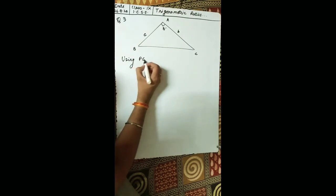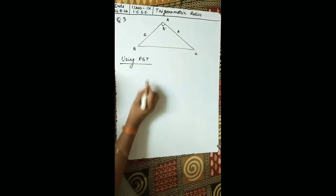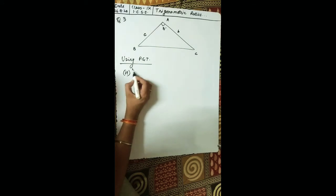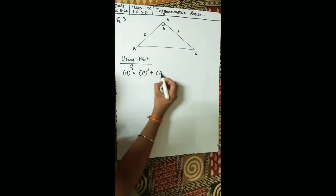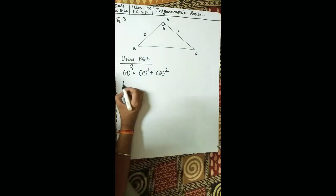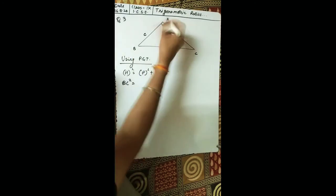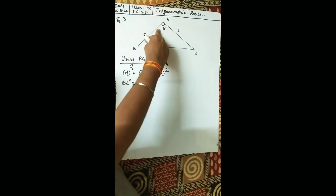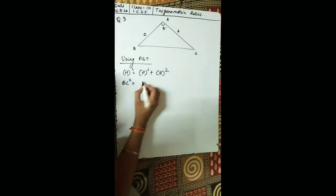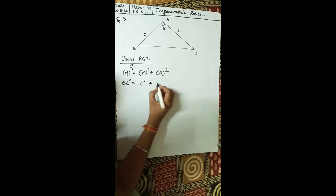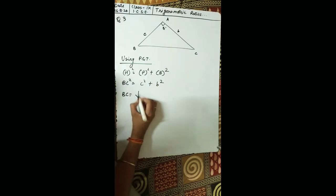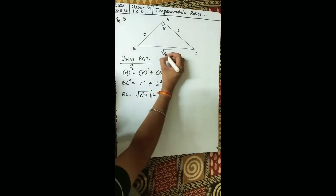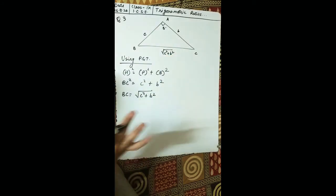Using the Pythagorean theorem (PGT for short): hypotenuse squared equals perpendicular squared plus base squared. The base is BC, so BC squared equals c squared plus b squared. Therefore BC equals the square root of c squared plus b squared. Keep that result as it is.